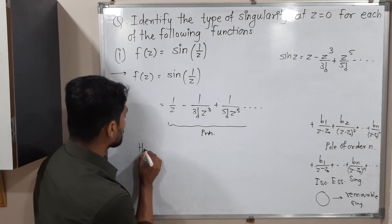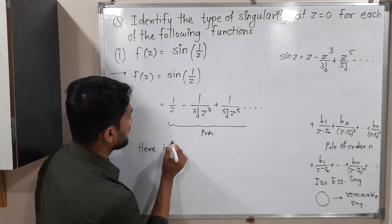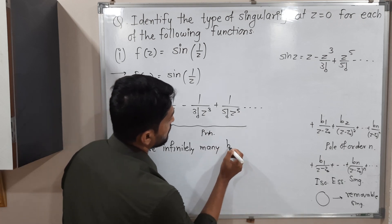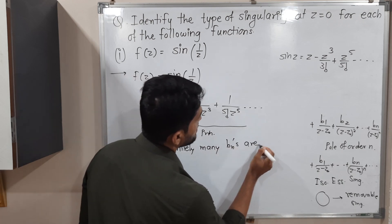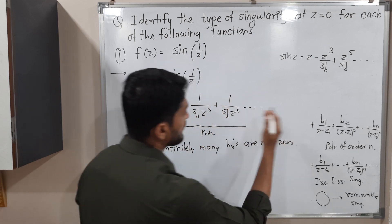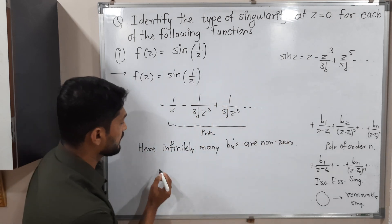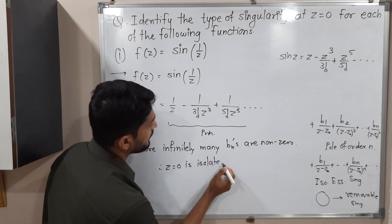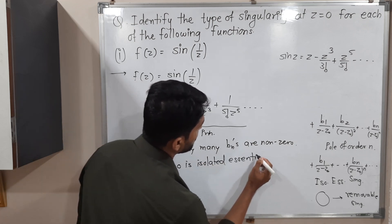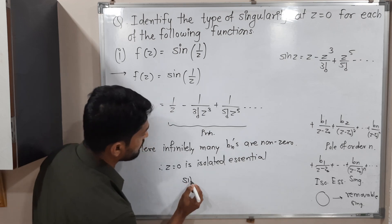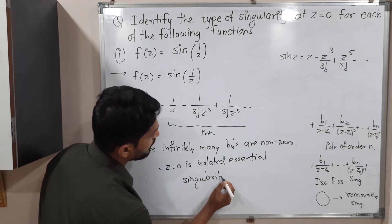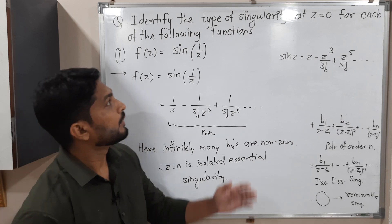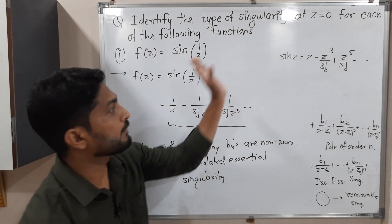Infinitely many b_n's are non-zero — it is not terminating anywhere. Therefore, Z is equal to 0 is an isolated essential singularity. So in this way we found out the type of singularity of Z is equal to 0 for f(z). This example is over.